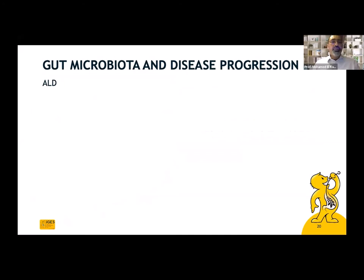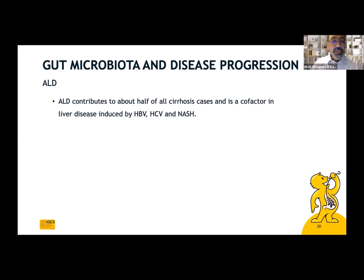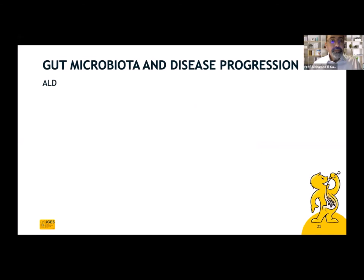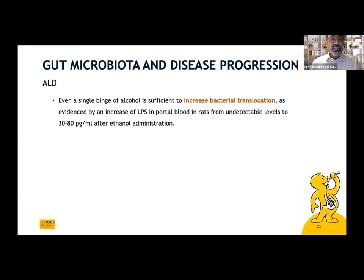Most chronic liver diseases are linked to gut microbiota. Alcoholic liver disease is one of the most common chronic liver diseases. The risk of hepatic carcinoma related to alcoholic liver disease is much lower than in viral hepatitis, but the large number of patients living with alcoholic liver disease leads to more patients developing hepatic carcinoma on top of it. Studies state that even a single binge of alcohol is sufficient to increase bacterial translocation, as evidenced by an increase of lipopolysaccharide in portal blood of rats.